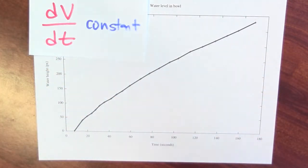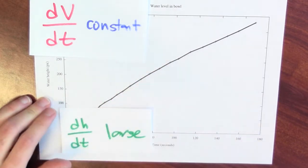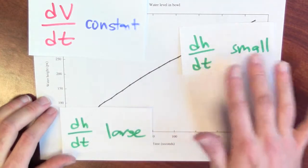But dh/dt starts off very large. The water's height is increasing very rapidly at first. And by the end of this process, dh/dt is small.